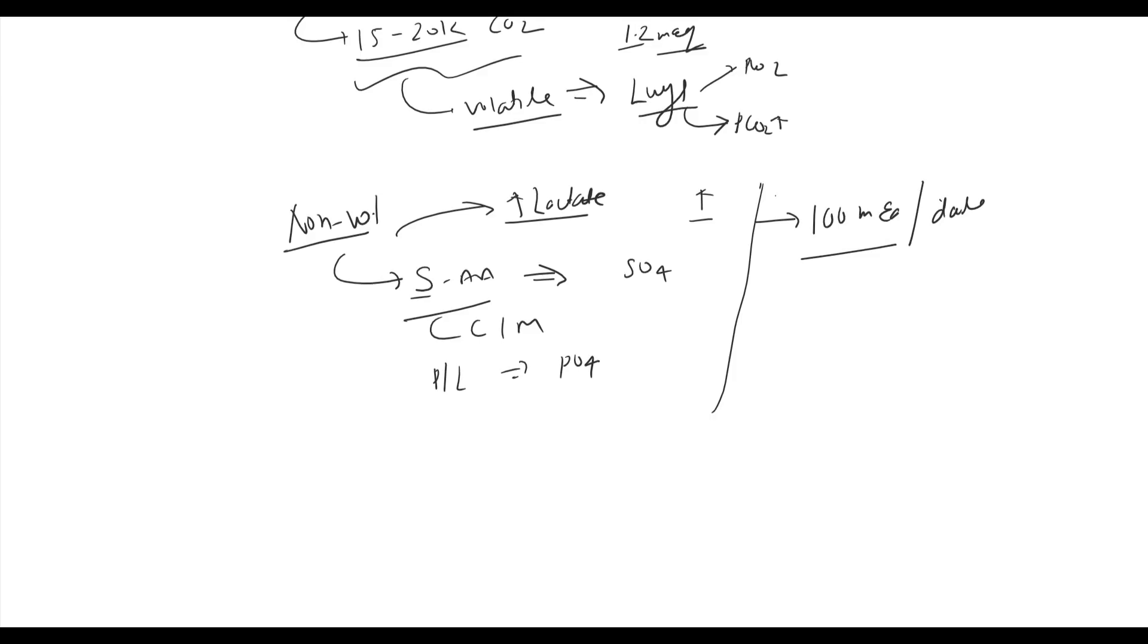Kidney can increase acid excretion up to 300 mmol daily with increased acid load. Lung and kidney maintain extracellular pH in the normal narrow range of 7.35 to 7.45, corresponding to 40 nmol H+ concentration. H+ ions don't exist freely; they combine with water to form hydronium ions.